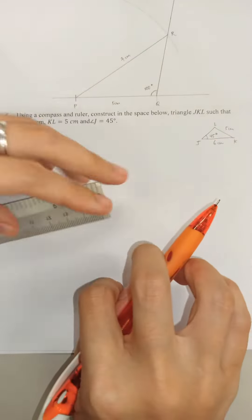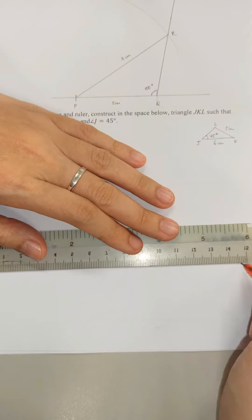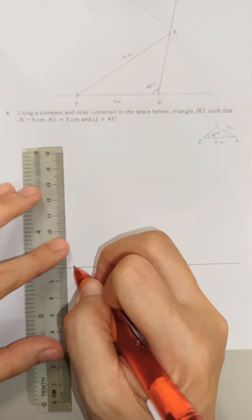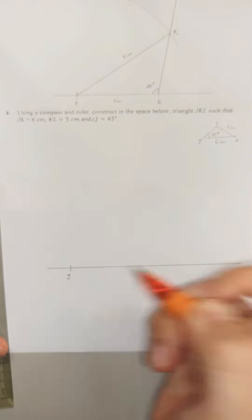So now that I'm done with my sketch, I'm going to construct a triangle. As usual, draw a horizontal line. Make a mark. This is going to be J.